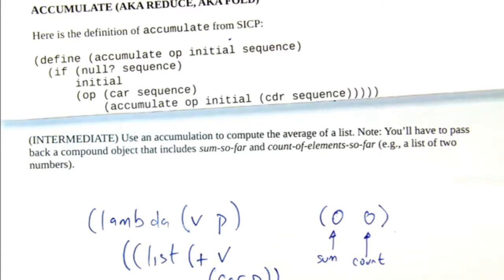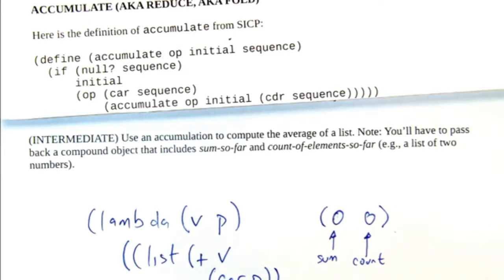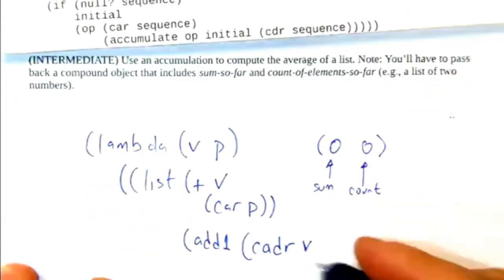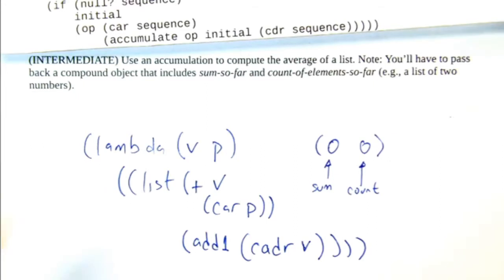And then what's the second item in the list? We're just going to increment the count. So we'll add one. How do we extract the count out of this P object? Yeah, car of the cdr. Cdr of P. Thank you.